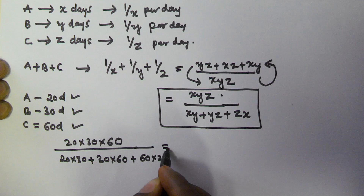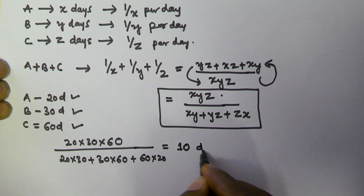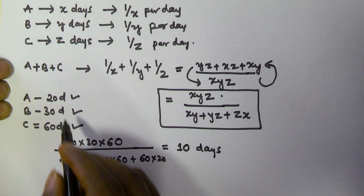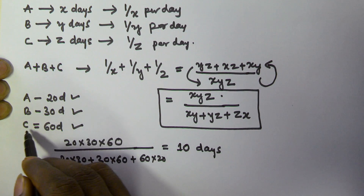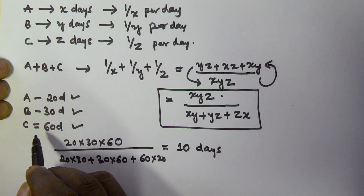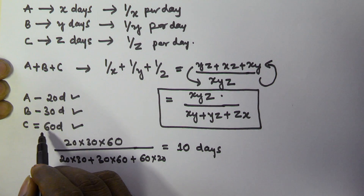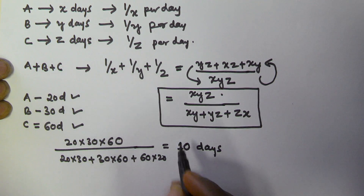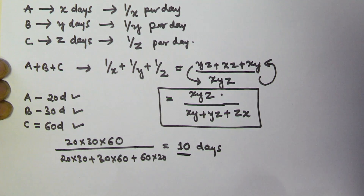Solving this equation, you get 10. So if A takes 20 days, B takes 30 days, and C takes 60 days to finish the work, if all three are working together they will finish the work in 10 days.